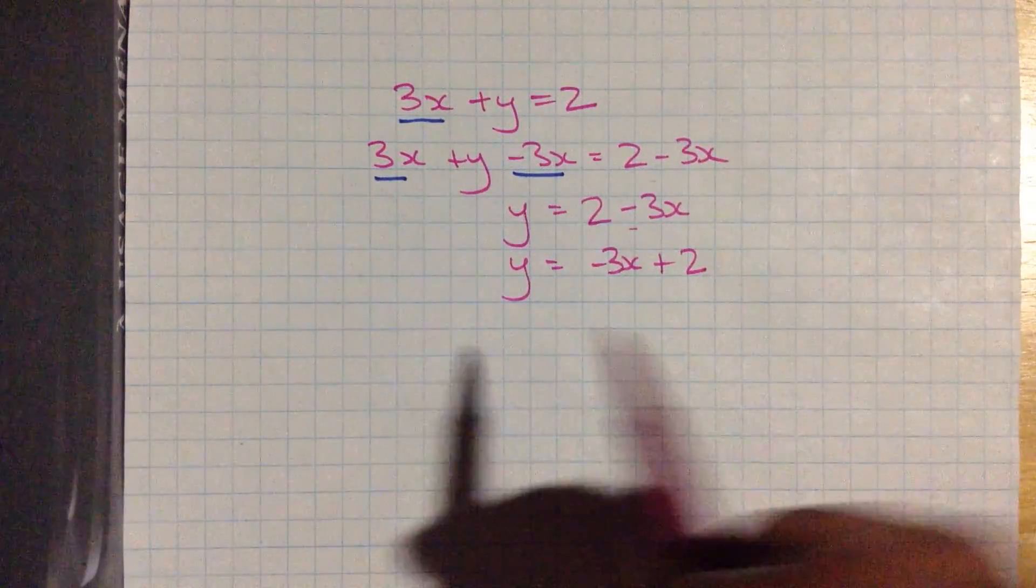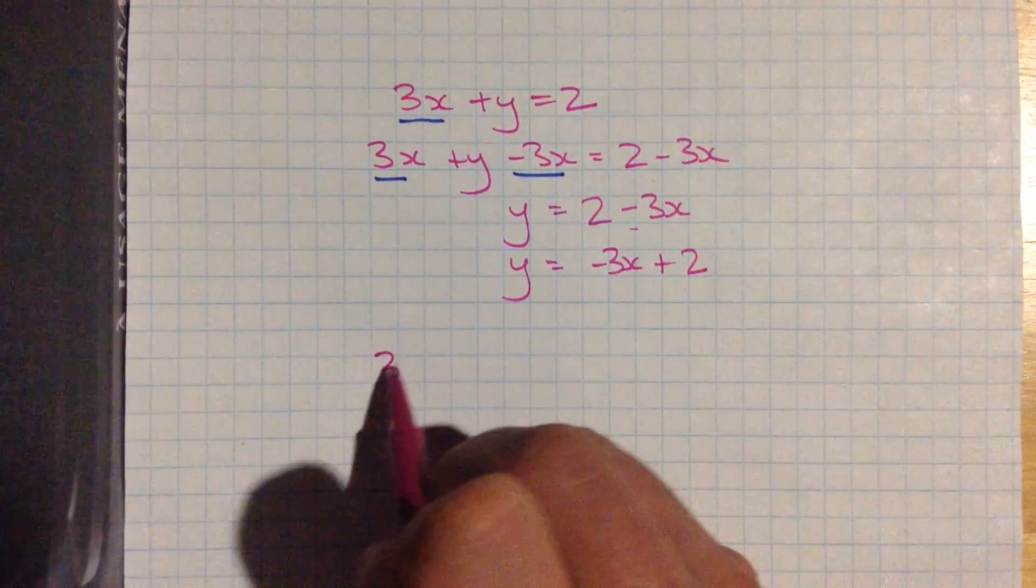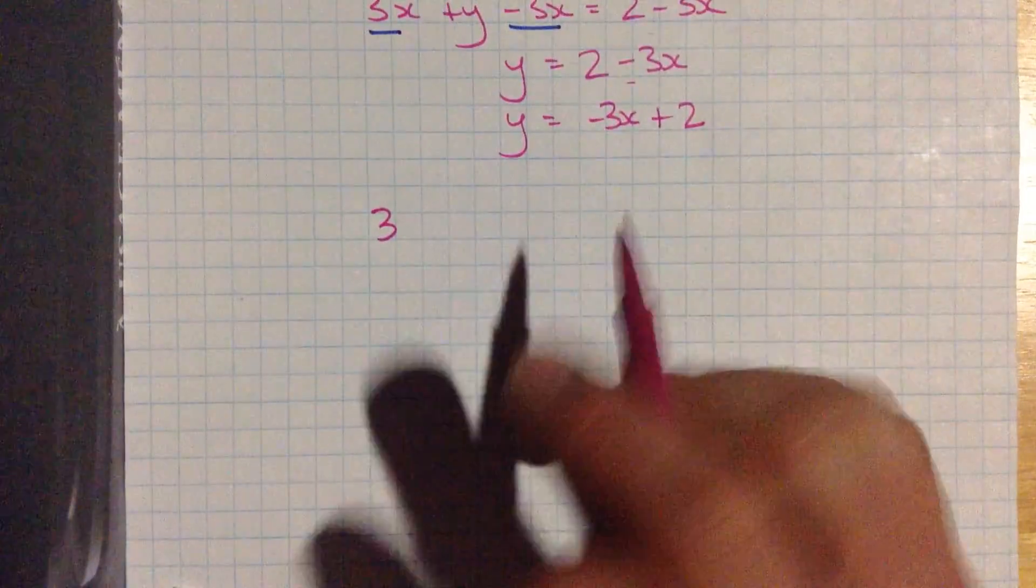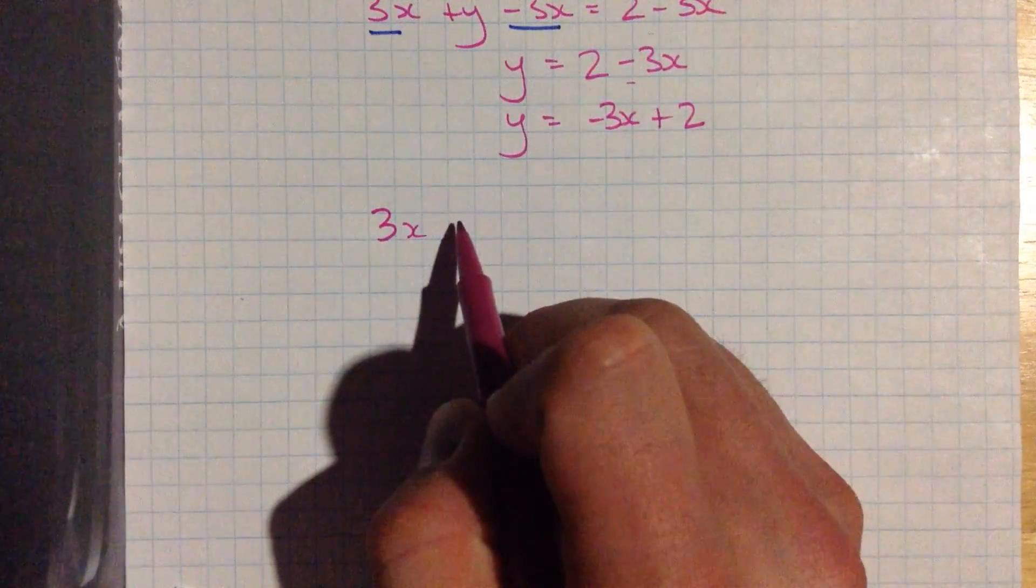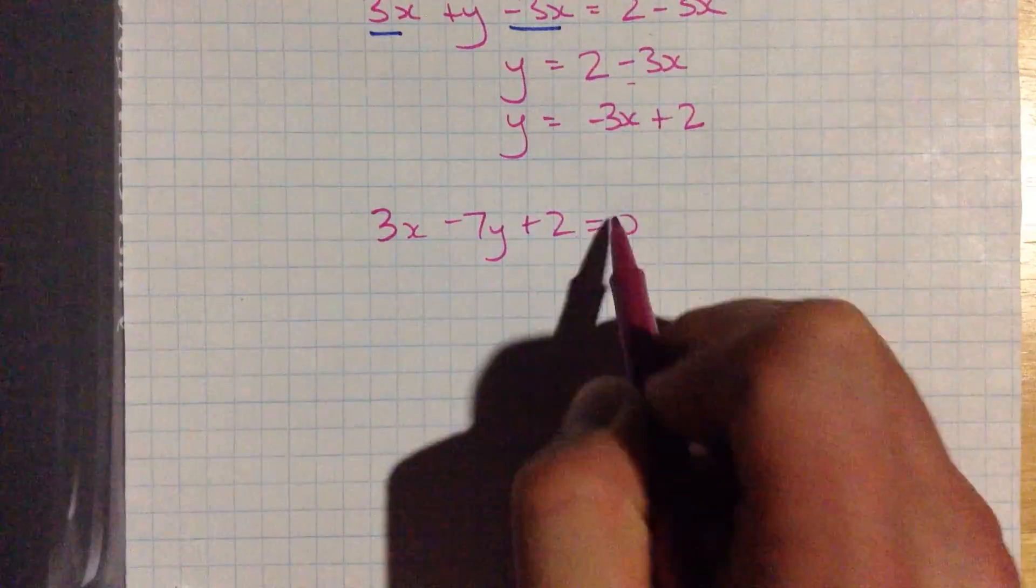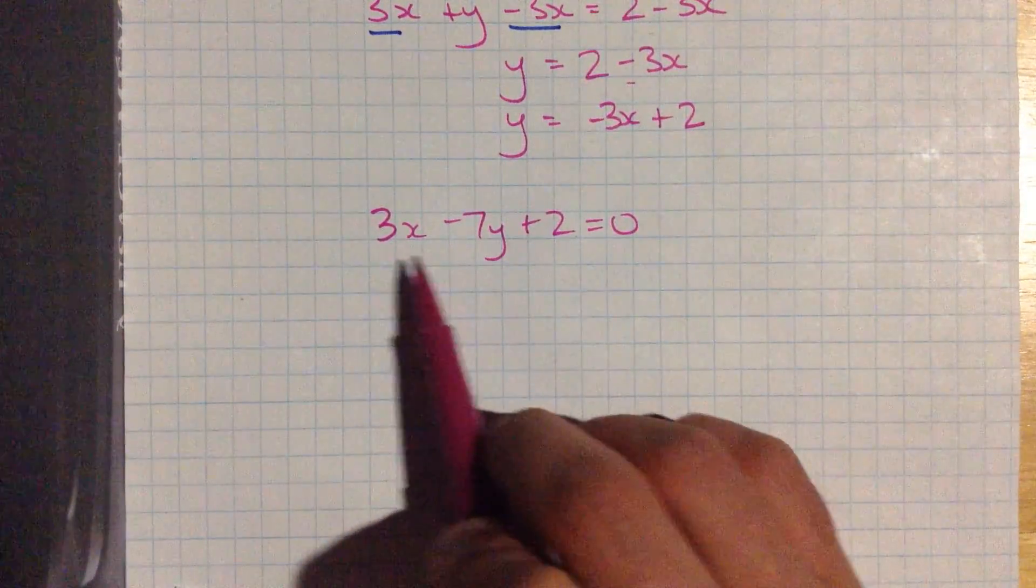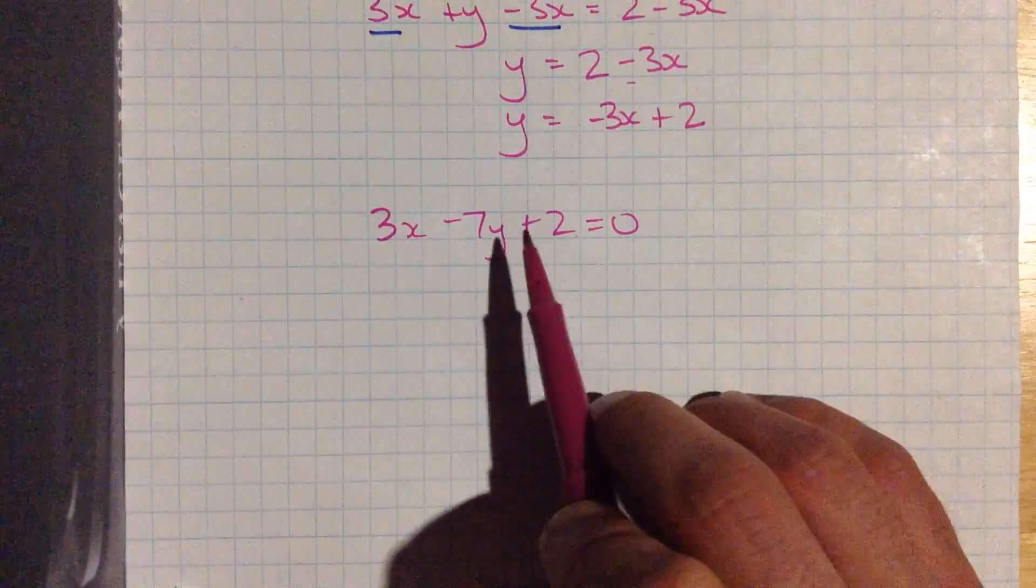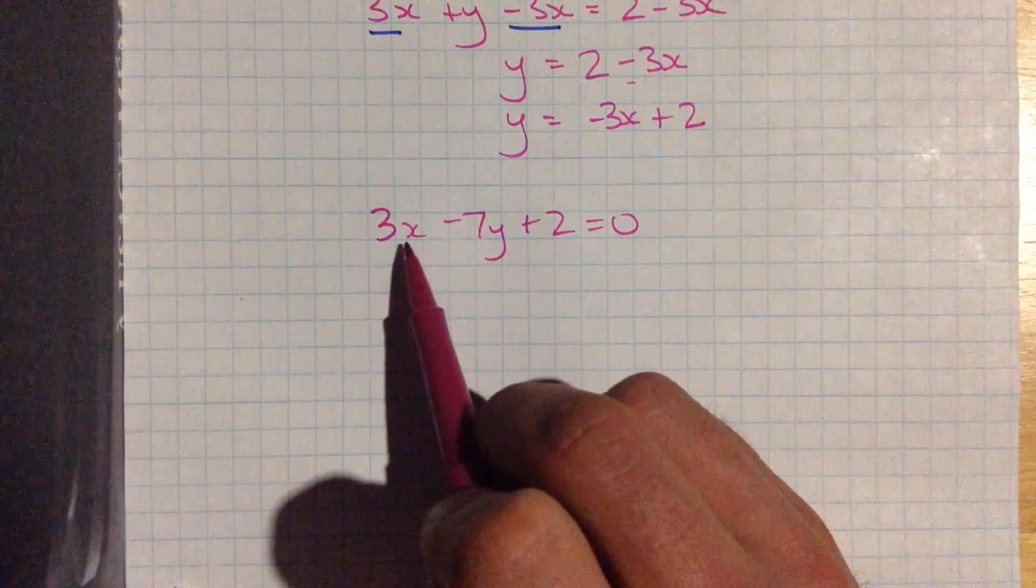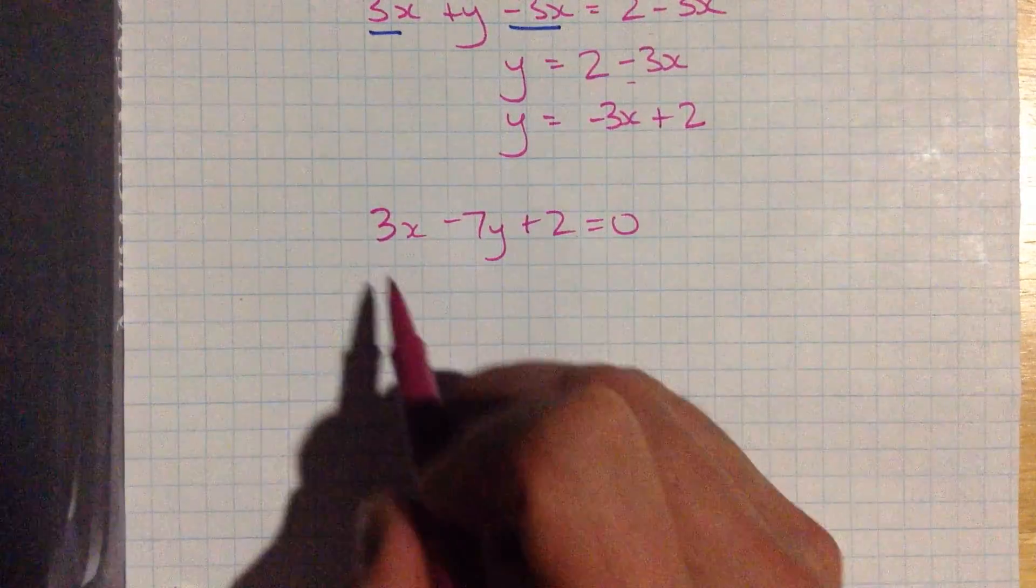All right, let's do one that's a little bit harder, which includes some fractions in the final result. 3x minus 7y plus 2 equals 0. This is what we might call standard form, where everything, every term is written all on one side. It all equals 0. And each variable here shows up sort of in one spot.